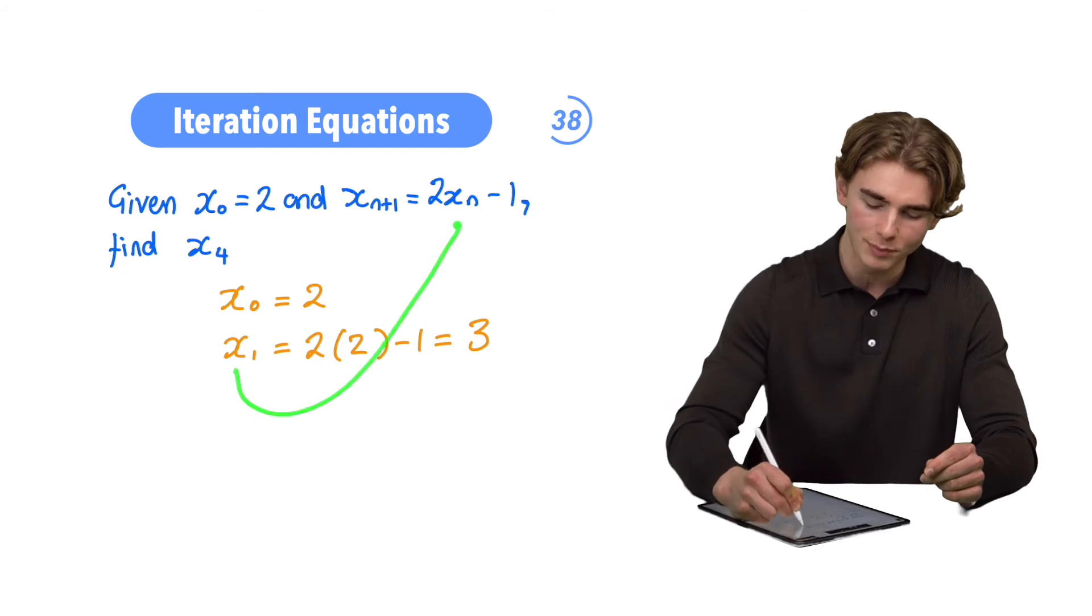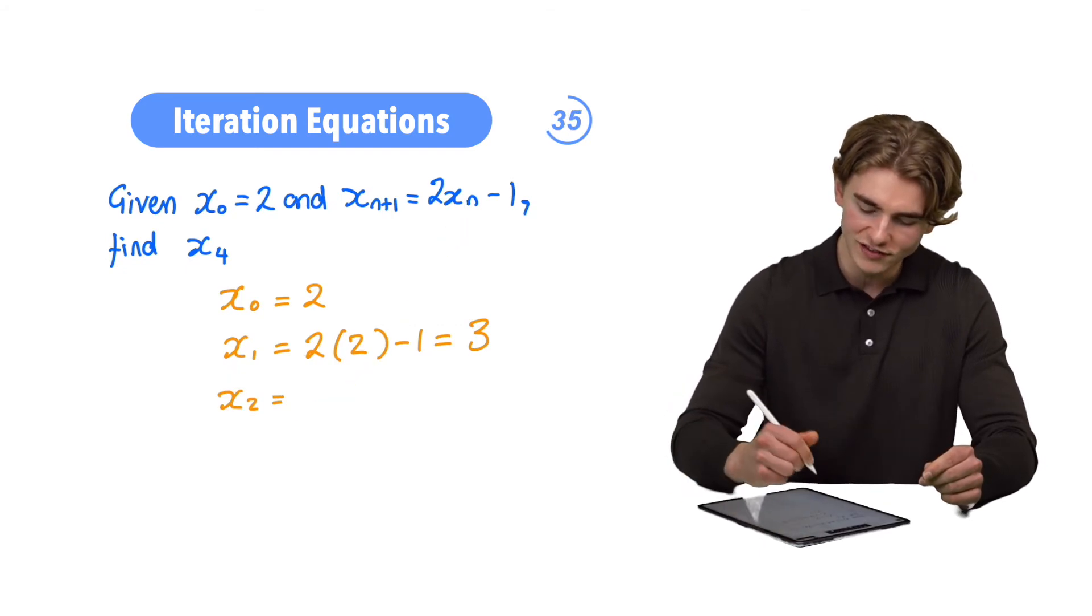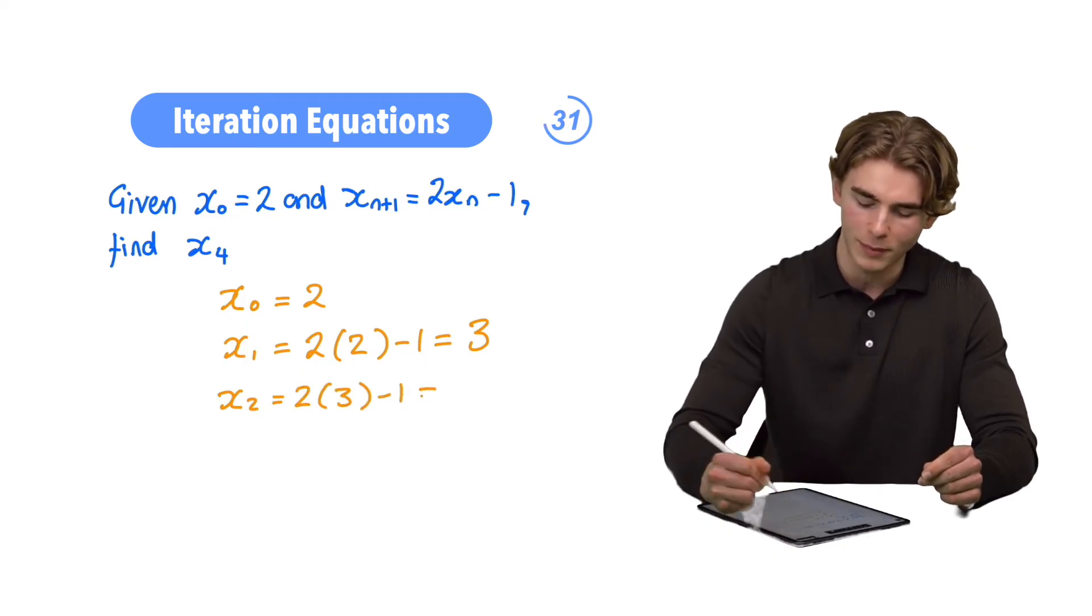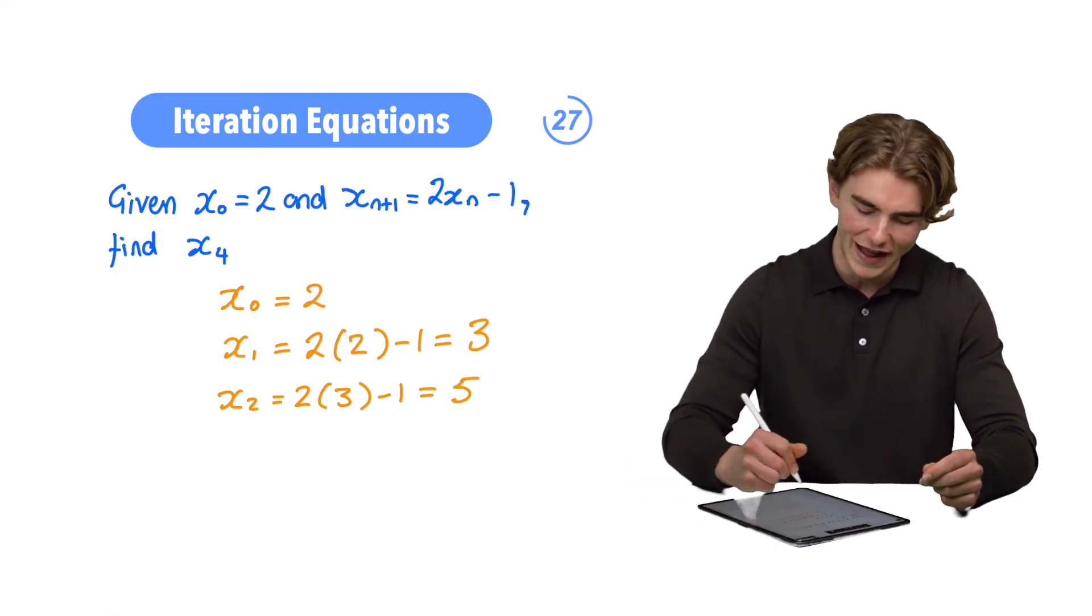Now, to find the value of x2, we plug x1 in. x2 equals substituting 3, so we get 2 times by 3 minus 1. 2 times by 3 is 6 minus 1, that is going to be 5. So, we have x2 as 5.